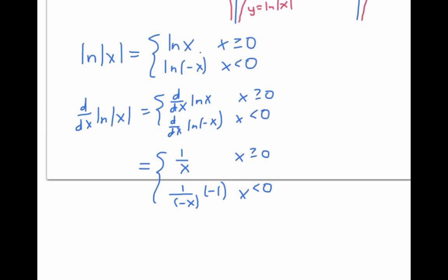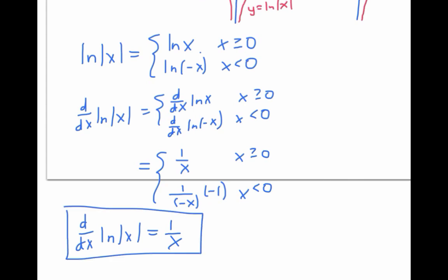Notice that this second expression simplifies to one over x. So the derivative of ln of absolute value of x is equal to one over x, whether x is positive or negative. This formula will come in handy later when we start doing integrals.